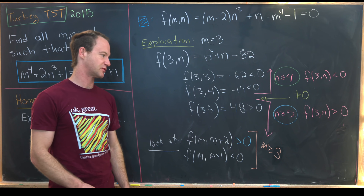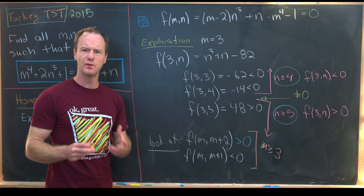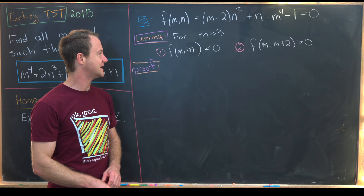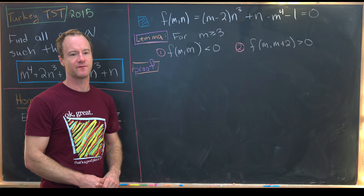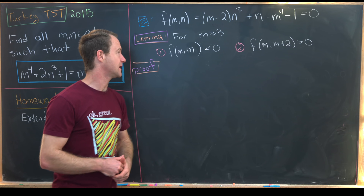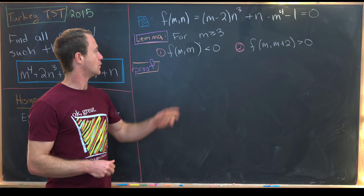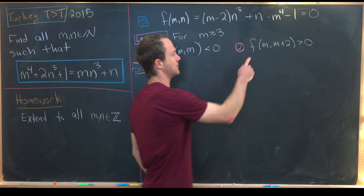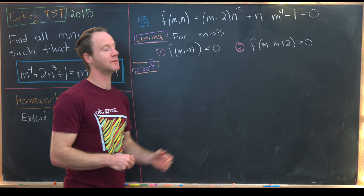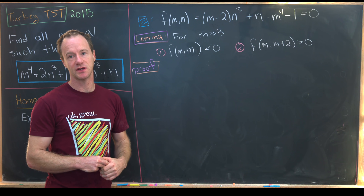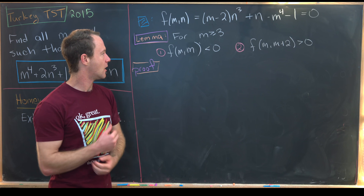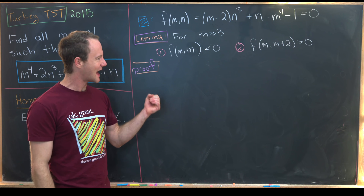Let's summarize with a preparatory lemma. For m ≥ 3, we claim: (1) f(m, m) < 0, and (2) f(m, m+2) > 0. If you work through the case with m+1 in the second entry, it turns out not to be as helpful, so we focus on m and m+2. Let's prove each part.